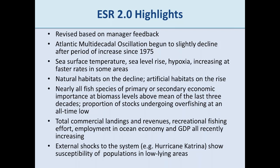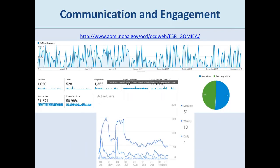Key revisions to the ESR 2.0: it was revised based on management input — we asked all management partners what they liked and didn't like about the first report. We went from about 150 indicators down to about 30, and added more human dimensions indicators. Highlights include: sea surface temperatures, sea level rise, and hypoxia all increasing; natural habitats declining but artificial habitats rising; yet nearly all fishery species of primary or secondary economic importance are at biomass levels above their mean for the last three decades. Proportion of stocks undergoing overfishing is at an all-time low. Commercial landings, revenues, recreational fishing effort, employment in the ocean economy, and GDP are all increasing — a fairly good management success story.